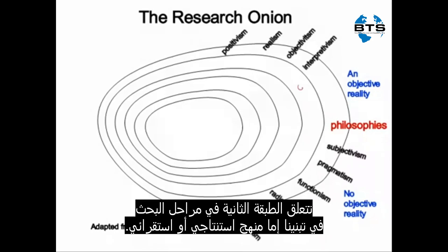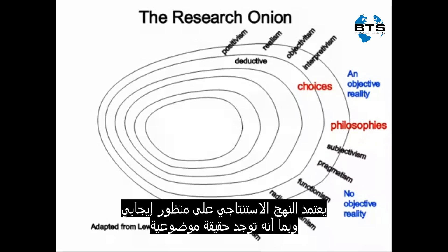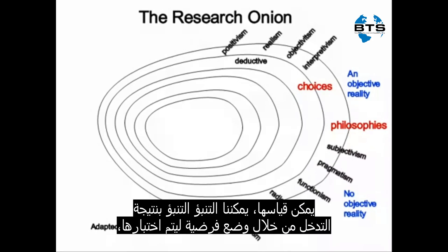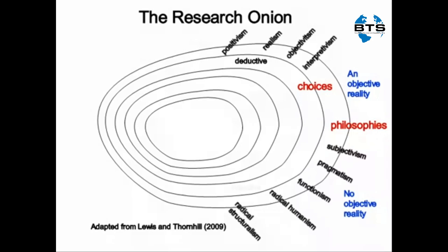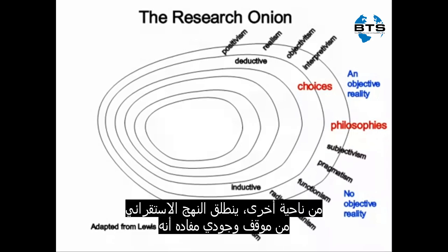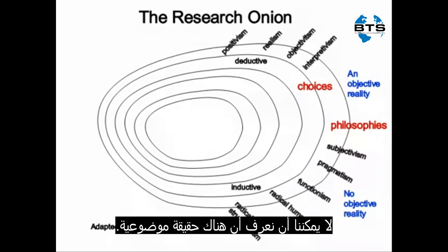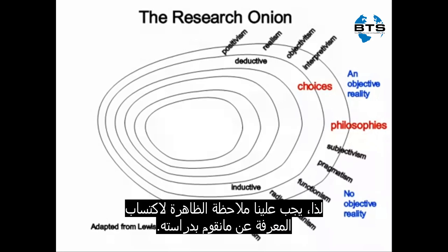The next layer of our research onion concerns whether we adopt a deductive or inductive approach. A deductive approach is based on a positive perspective — since there is an objective reality that can be measured, we can predict an outcome of an intervention by establishing a hypothesis to be tested, and that's how we would approach gaining knowledge about the phenomenon under investigation. On the other hand, an inductive approach proceeds from an ontological position that we cannot know that there is an objective reality; therefore, we need to observe the phenomenon in order to gain knowledge about that which we are studying.